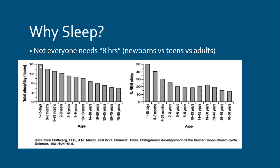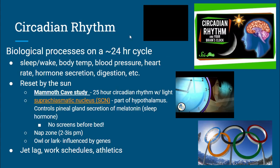Sleep needs change over our lifetime. Newborns sleep about 16 hours a day. Two- to three-year-olds sleep over 12 hours. Ages 14 to 18 need between nine and ten hours — probably not getting it, but it's important because that's when you're forming neural connections and pruning. Ages 19 to 30 need around eight hours. At age 70 and older, only four to six hours are necessary, as the body doesn't need as much recovery time.